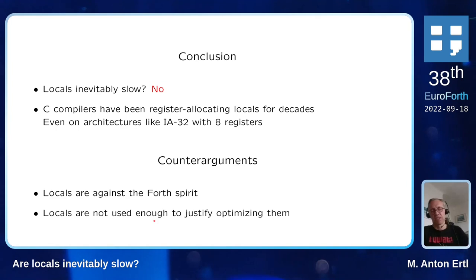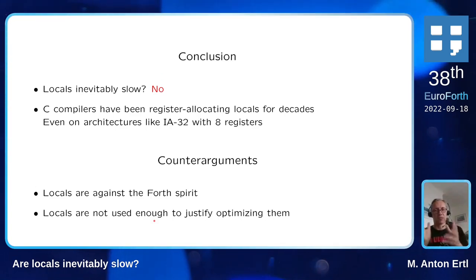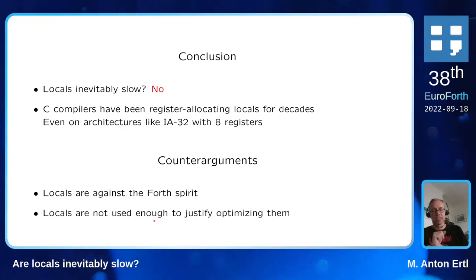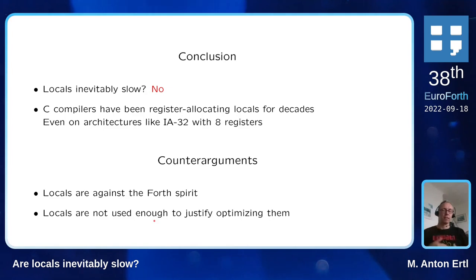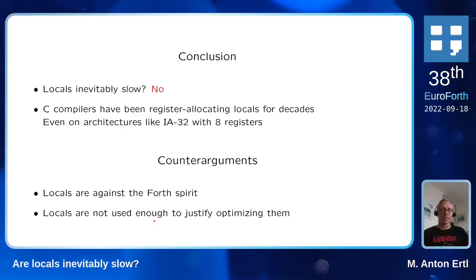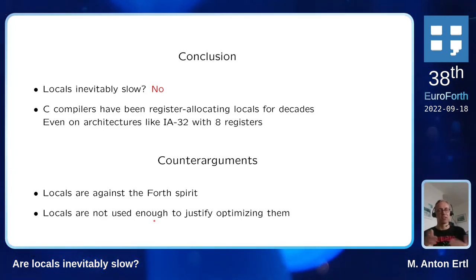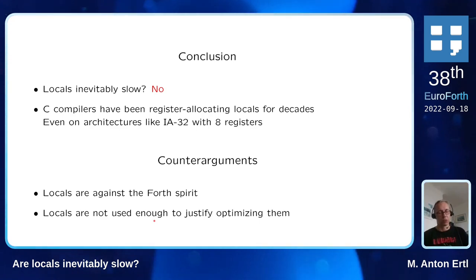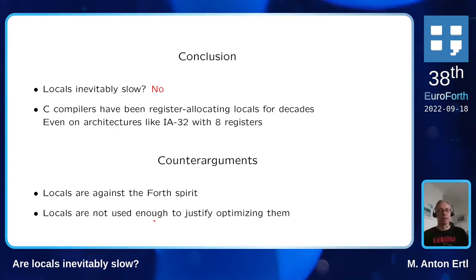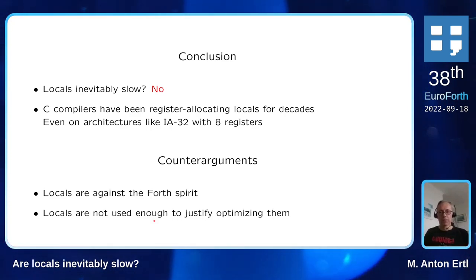Another reason not to optimize locals is that they are not used frequently enough to justify optimizing them. There's something to that, but there's also a vicious circle: Nick Nelson originally wrote his code with locals, but found it too slow so he changed it. As a result, when you look at how much optimizing locals buys you, it doesn't buy much — because all the frequently executed code avoids locals because local implementations are so slow. If we had efficient locals, we would have saved Nick the time to rewrite it.